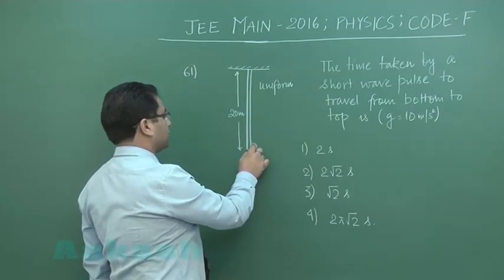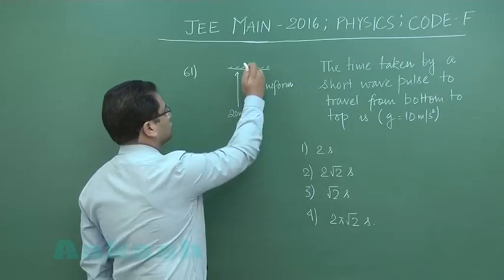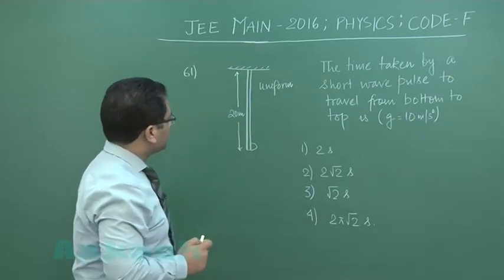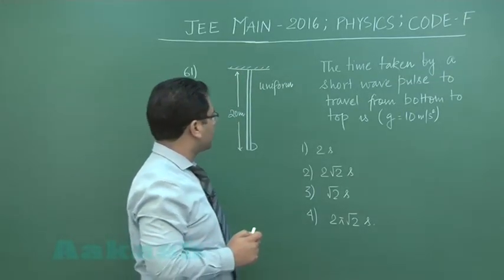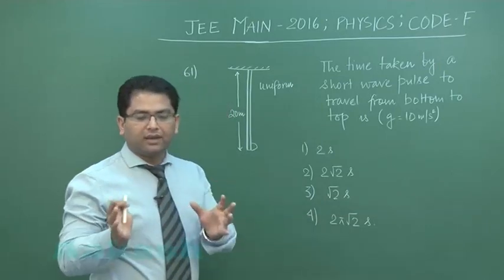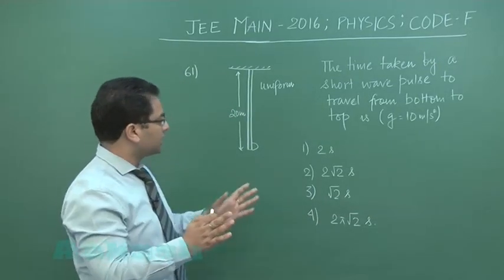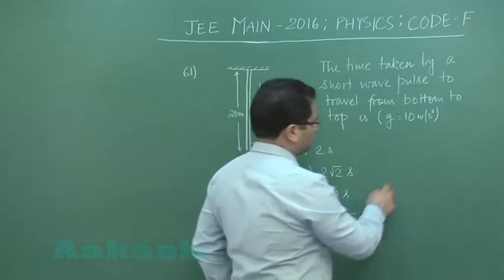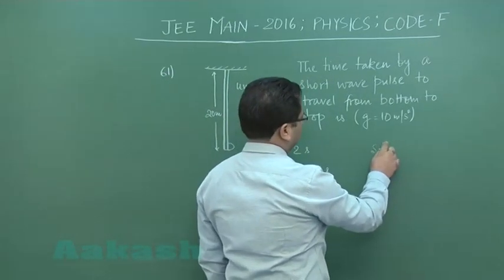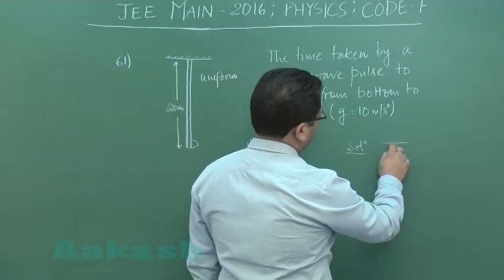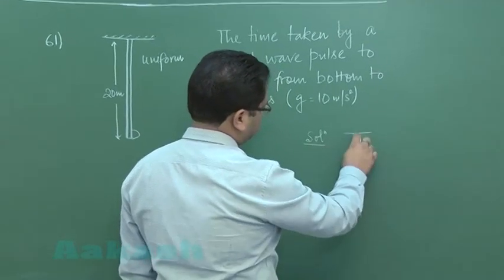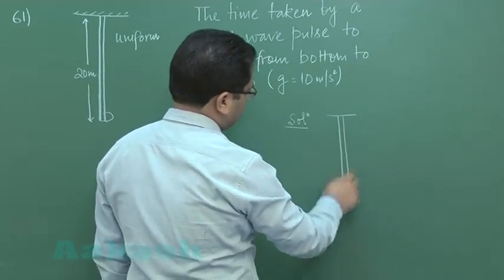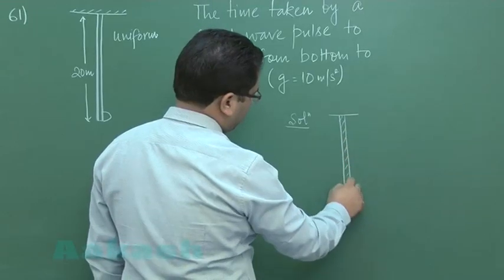Now the first thing is we have to calculate the wave velocity. Although the question is not so difficult, it's a routine question. So if I start solving it, the rope is massive and uniform, of course for our simplicity.